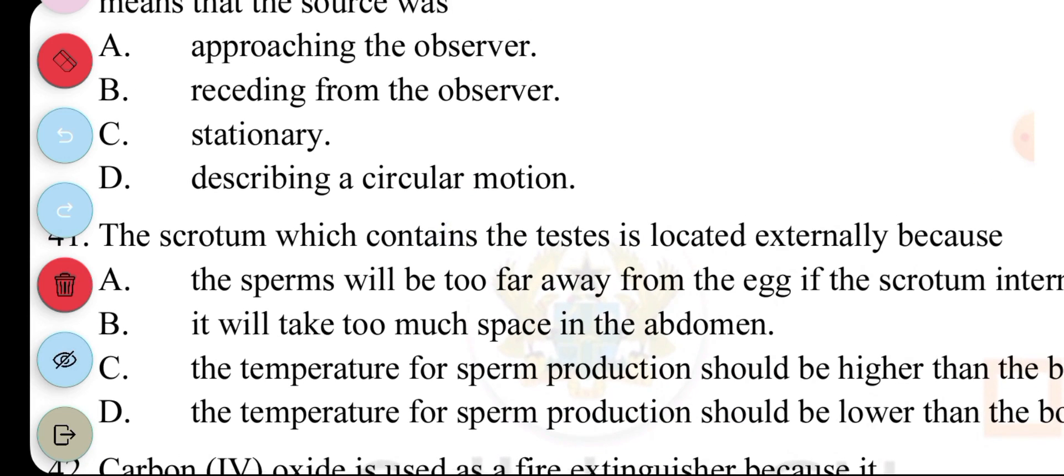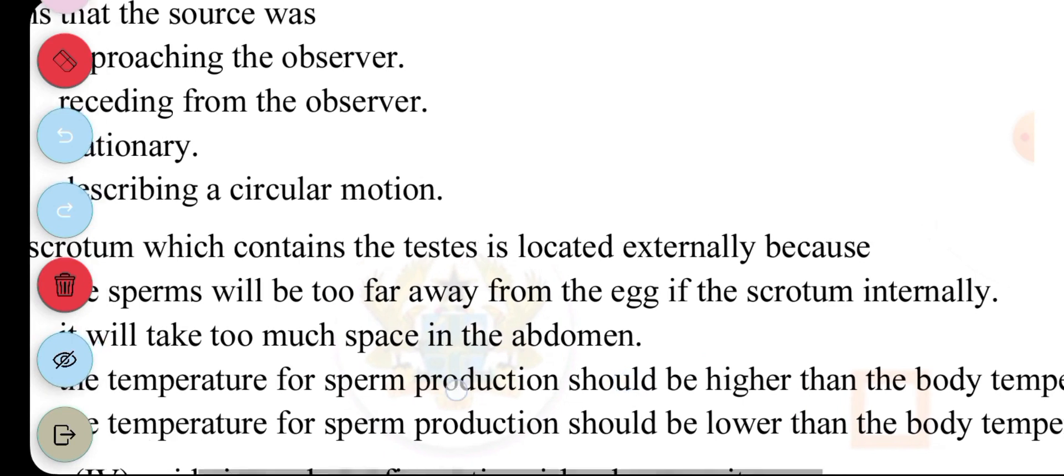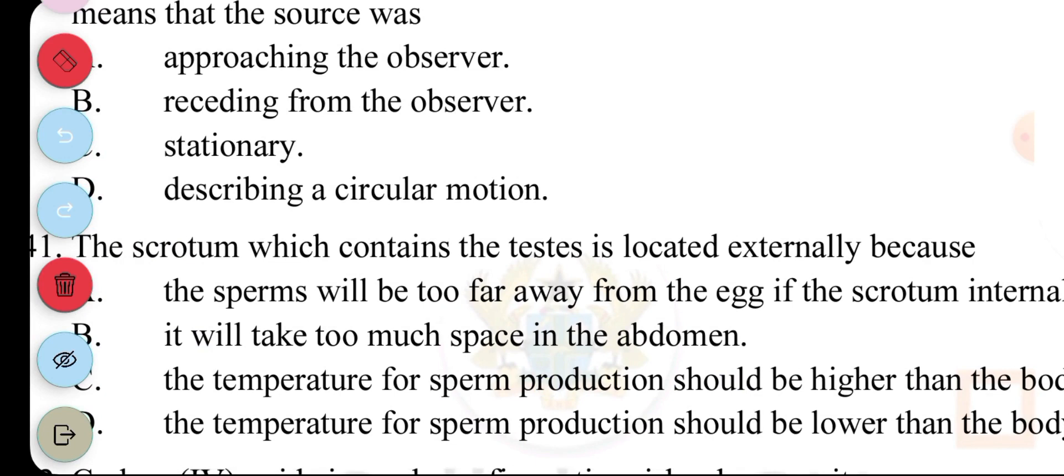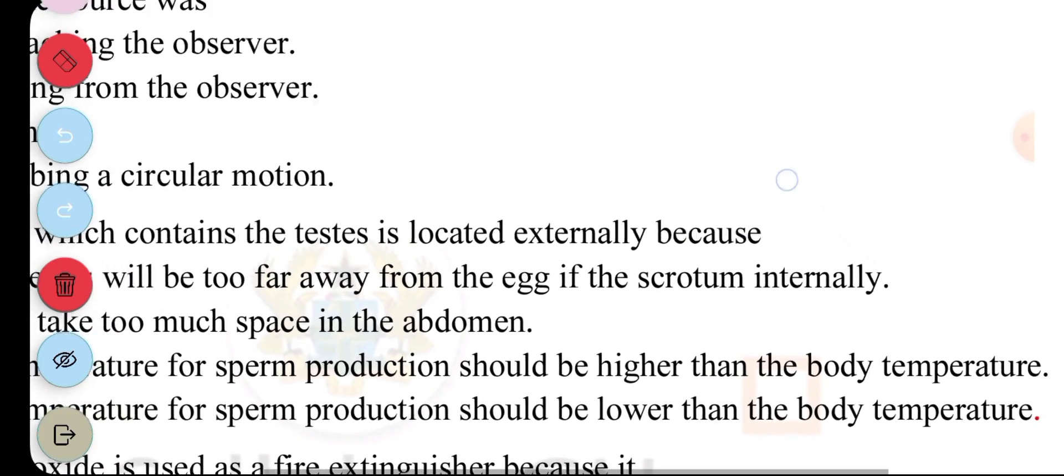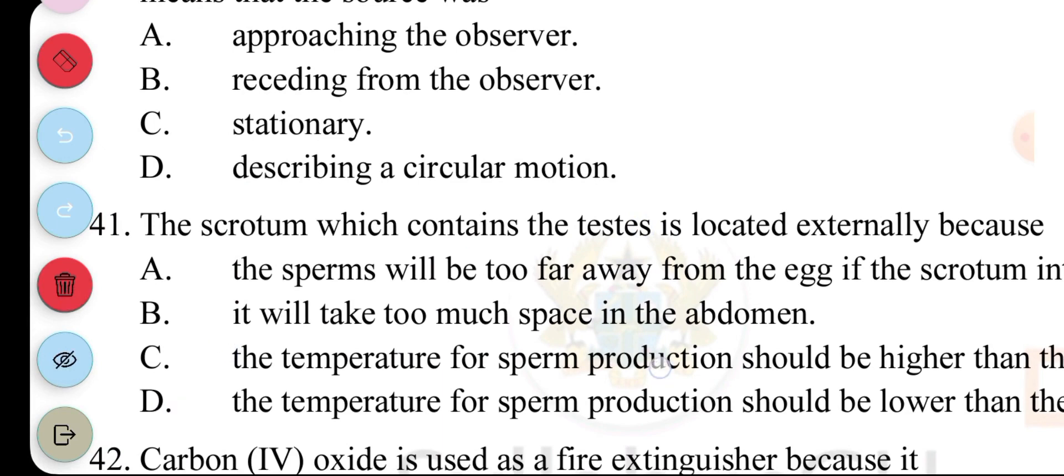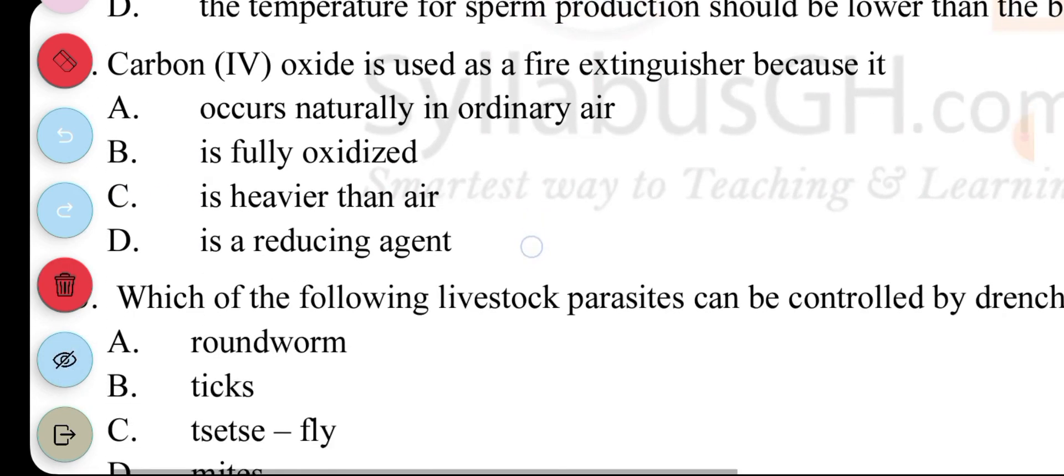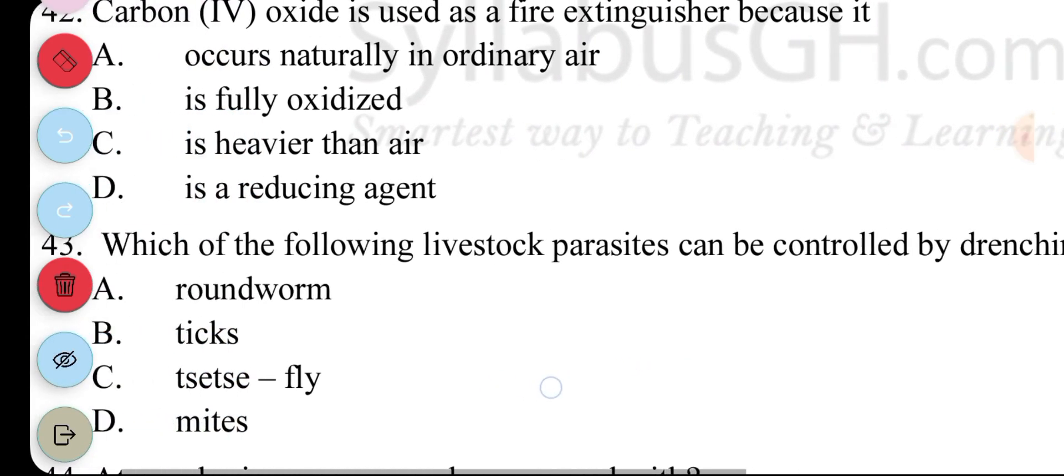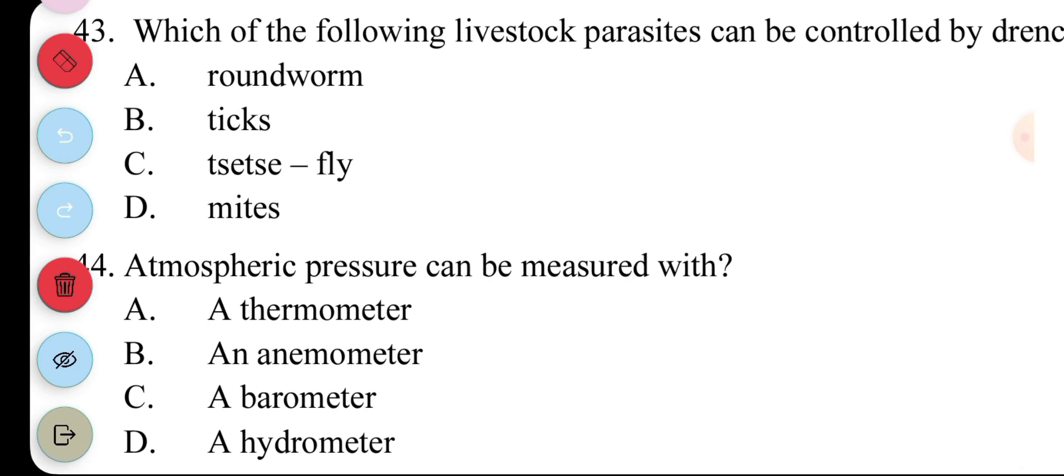41. The scrotum which contains the testes is located externally because... A. The sperms will be too far from the egg if the scrotum is internal. B. It will take too much space in the abdomen. C. The temperature for sperm production should be higher than the body temperature. D. The temperature for sperm production should be lower than the body temperature. The answer to question 41 is D. 42. Carbon dioxide is used as a fire extinguisher because it... A. Occurs naturally in ordinary air. B. It is fully oxidized. C. It is heavier than air. D. It is a reducing agent. Answer to question 42 is... C. It is heavier than air. 43. The following livestock parasites can be controlled by drenching. A. Roundworm. B. Tick. C. Tsetse fly. D. Mite. Answer to question 43 is... A. Roundworm. 44. Atmospheric pressure can be measured with... C. Barometer.